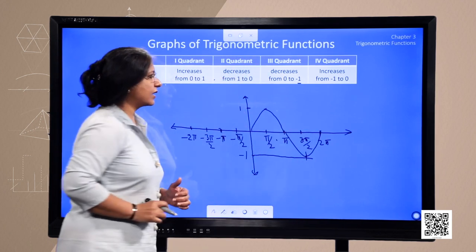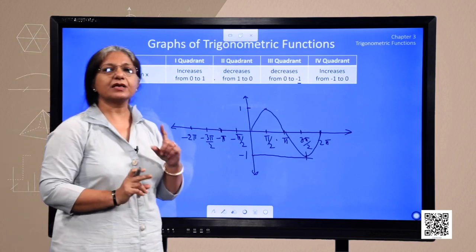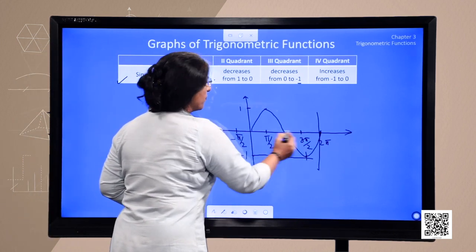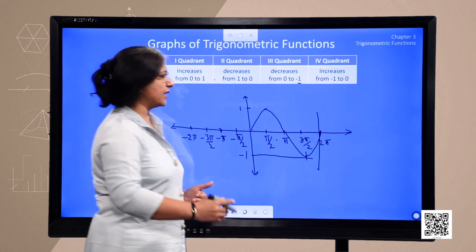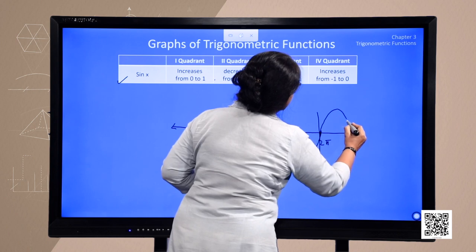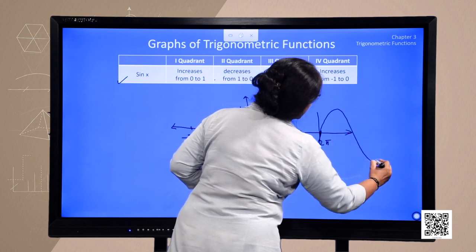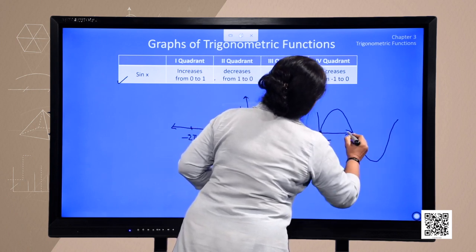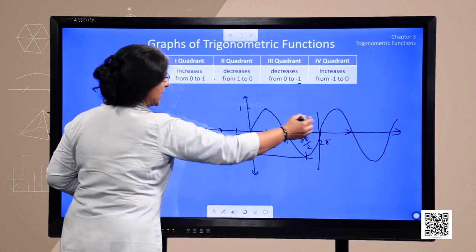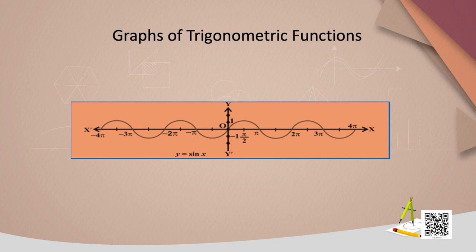This is the graph of sine in one complete revolution, from 0 to 2 pi, and it keeps on repeating, since the value of sine does not change at integral multiples of 2 pi. So it goes on endlessly in the positive direction and in the negative direction also, it moves in the same shape. This is the graph of sin x.